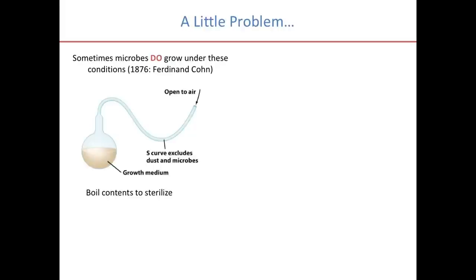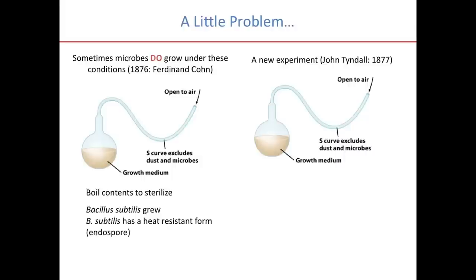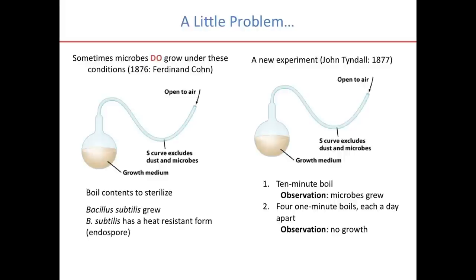There is still a little problem with this experiment — some microbes do grow under these conditions. The broth had been boiled to sterilize it and was open to air but curved in such a way that excluded microbes. The problem is that some microorganisms still grew. In particular, the organism that grew was Bacillus subtilis, because it has a heat-resistant form called an endospore. A new experiment was set up to address this.